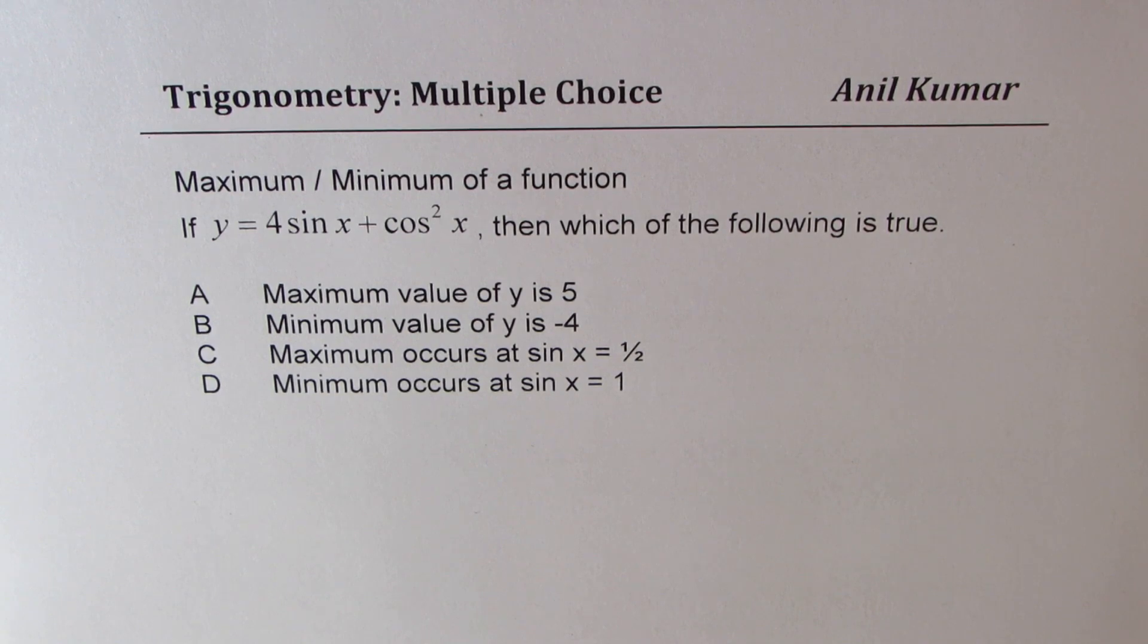The four options are: maximum value of y is 5, minimum value of y is minus 4, maximum occurs at sin x equals to half, and minimum occurs at sin x equals to 1. You can pause the video, answer the question, and then look into my suggestions.